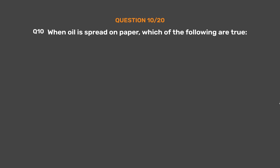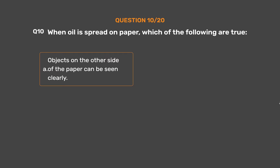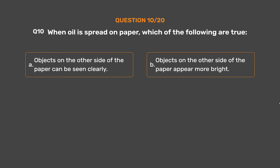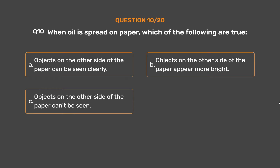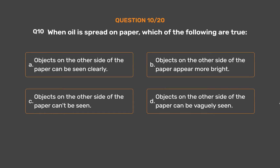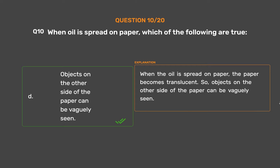Question number 10. When oil is spread on paper, which of the following is true? Option A: Objects on the other side of the paper can be seen clearly. Option B: Objects on the other side appear more bright. Option C: Objects on the other side can't be seen. Option D: Objects on the other side can be vaguely seen. The correct answer is Option D. When oil is spread on paper, the paper becomes translucent, so objects on the other side can be vaguely seen.